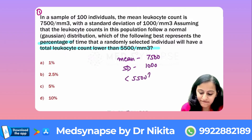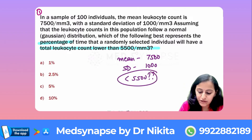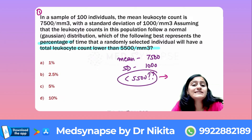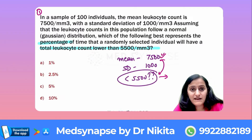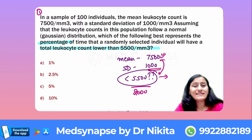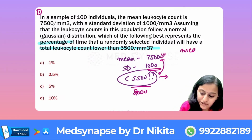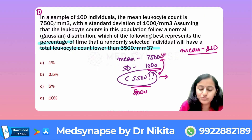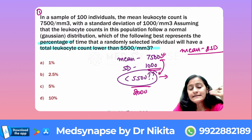They have given you the mean as 7500 and the standard deviation as 1000. How much will be less than 5500? The value given is how many standard deviations below the mean: 7500 minus 5500 equals 2000. One standard deviation is 1000, so 2000 is two standard deviations. The value given is mean minus two standard deviations.